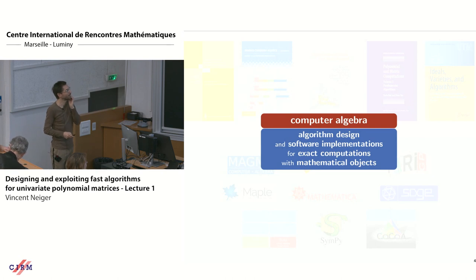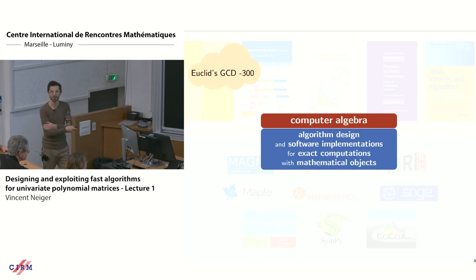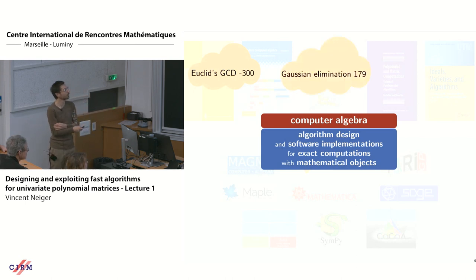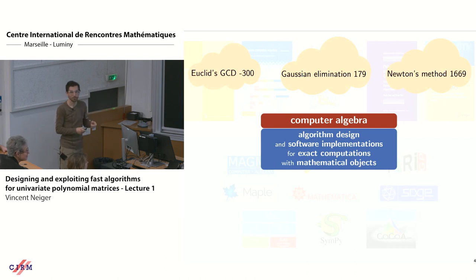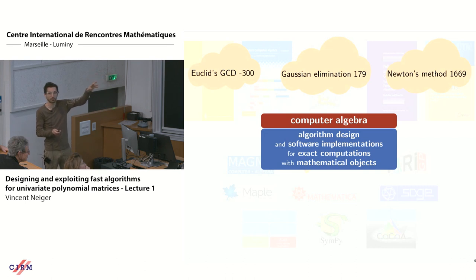I would summarize the field — a summary is never perfect — as designing algorithms and doing software implementations for exact computations with mathematical objects. Euclid was doing computer algebra somehow; you know about Euclid's algorithm for the GCD. There is Gaussian elimination, which is actually quite old — you can find it in Chinese textbooks from the second century. Newton's method is very important and I'm going to use it today. These three names were focusing on fast computations for practical purposes, and if you open the Modern Computer Algebra book, three of its five parts bear Euclid's, Gauss's, and Newton's names.